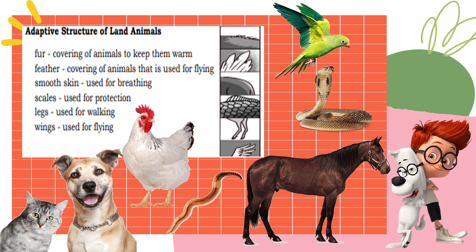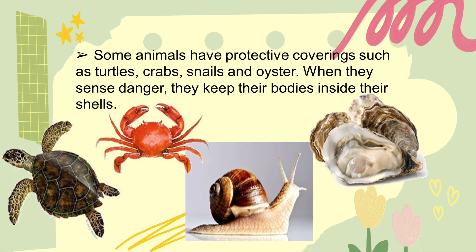Animals also have parts for movement — like legs for walking, swimming, and running, and wings for flying. Most of them have lungs for breathing. Some animals have protective coverings such as turtles, crabs, snails, and oysters. When they sense danger, they keep their bodies inside their shells. Wow, kids — animals are very interesting!